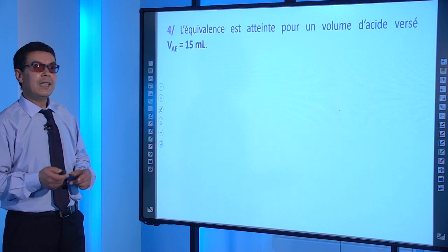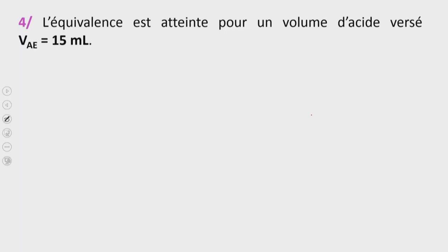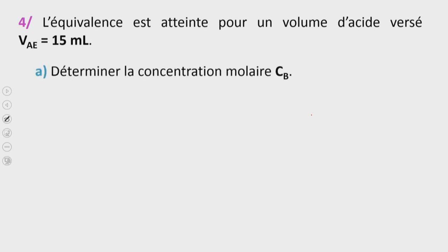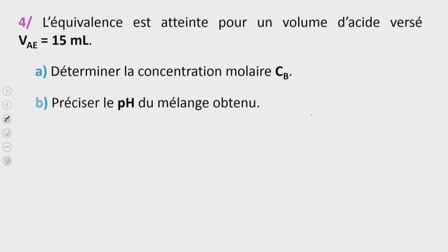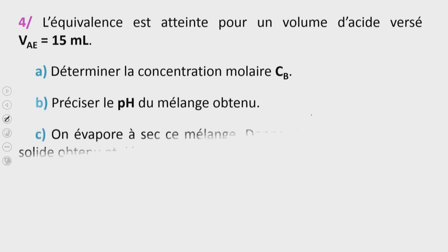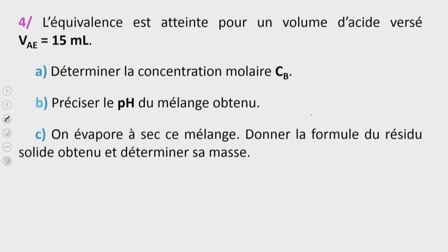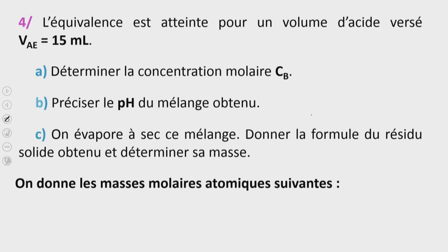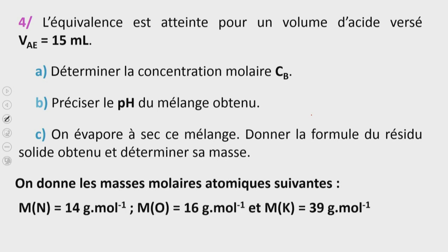Quatrième question : l'équivalence est atteinte pour un volume d'acide versé VAE = 15 mL. Petit a : déterminer la concentration molaire CB. Petit b : préciser le pH du mélange obtenu. Petit c : si on évapore à sec ce mélange, donner la formule du résidu solide obtenu et déterminer sa masse. On donne les masses molaires atomiques suivantes : azote = 14 g·mol⁻¹, oxygène = 16 g·mol⁻¹, potassium = 39 g·mol⁻¹.